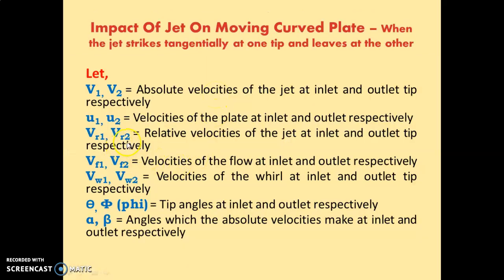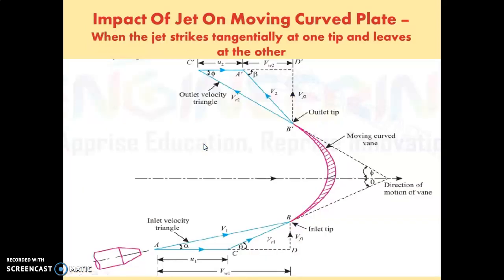Next, Vr1 and Vr2 — these are the relative velocities of the jet at the inlet and outlet tip respectively. Vr1 is the relative velocity at the inlet tip, and Vr2 is the relative velocity at the outlet tip.